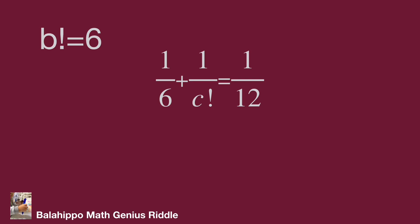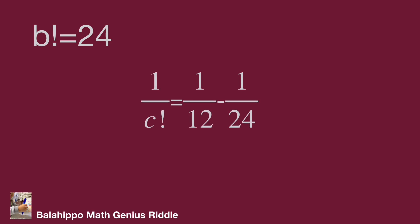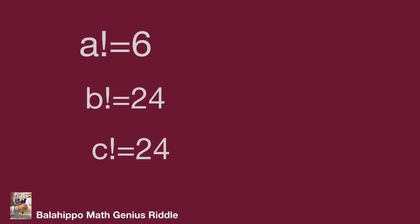Check when B factorial equals 24. Substituting into the equation gives 1 over 24 plus 1 over C factorial equals 1 over 12, so 1 over C factorial equals 1 over 12 minus 1 over 24 equals 1 over 24. So we get the value for each factorial: A factorial equals 6, B factorial equals 24, C factorial equals 24.